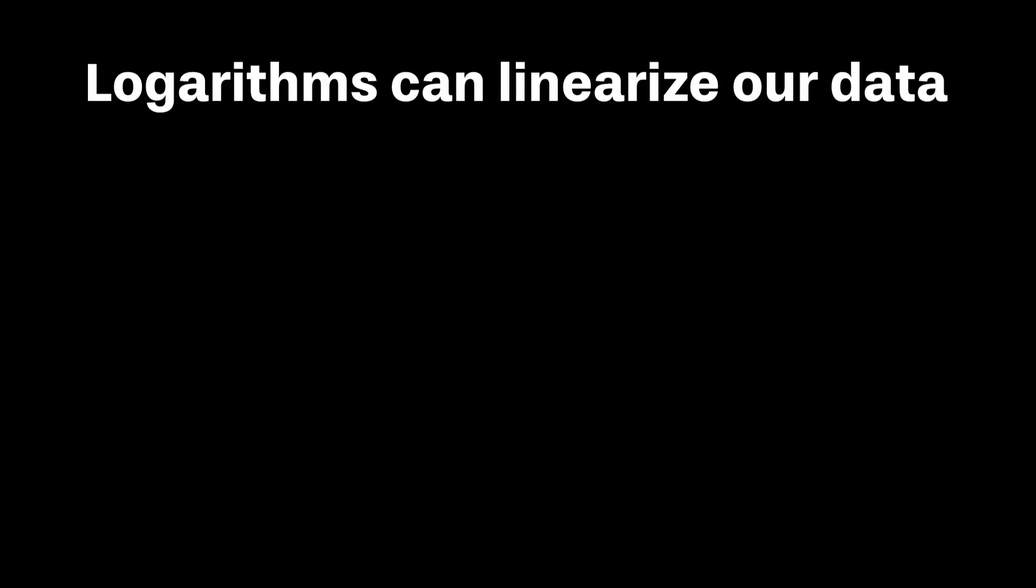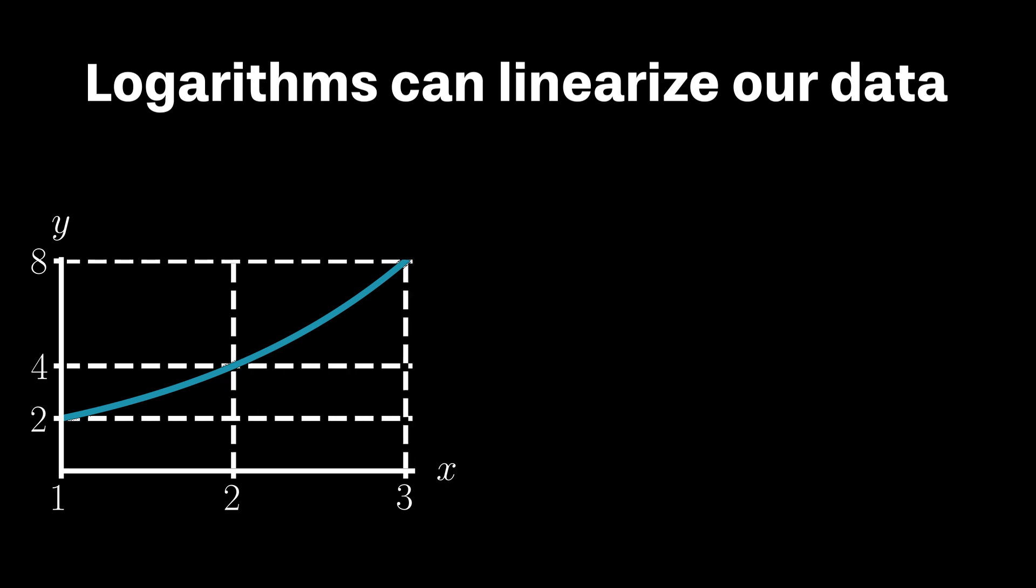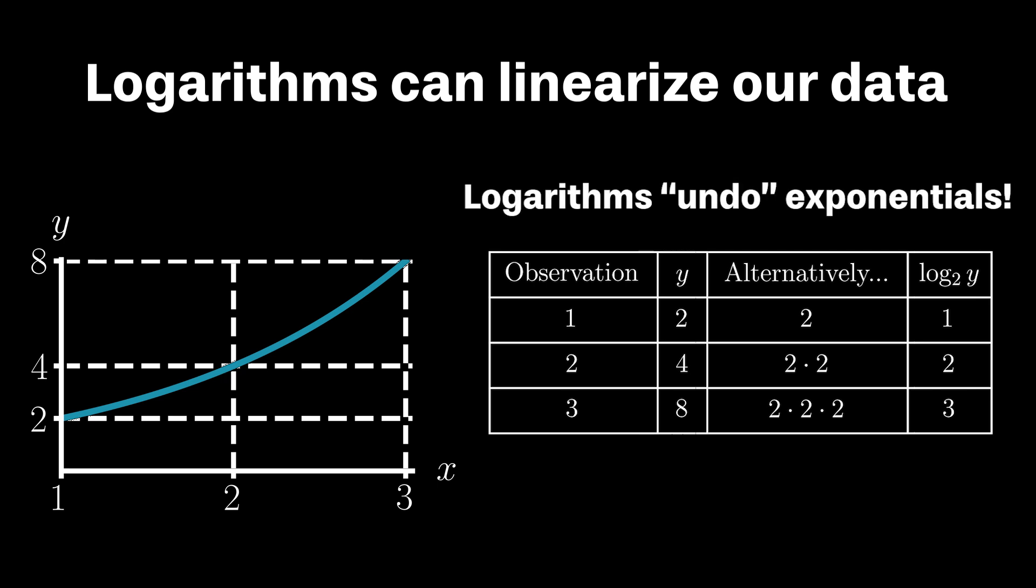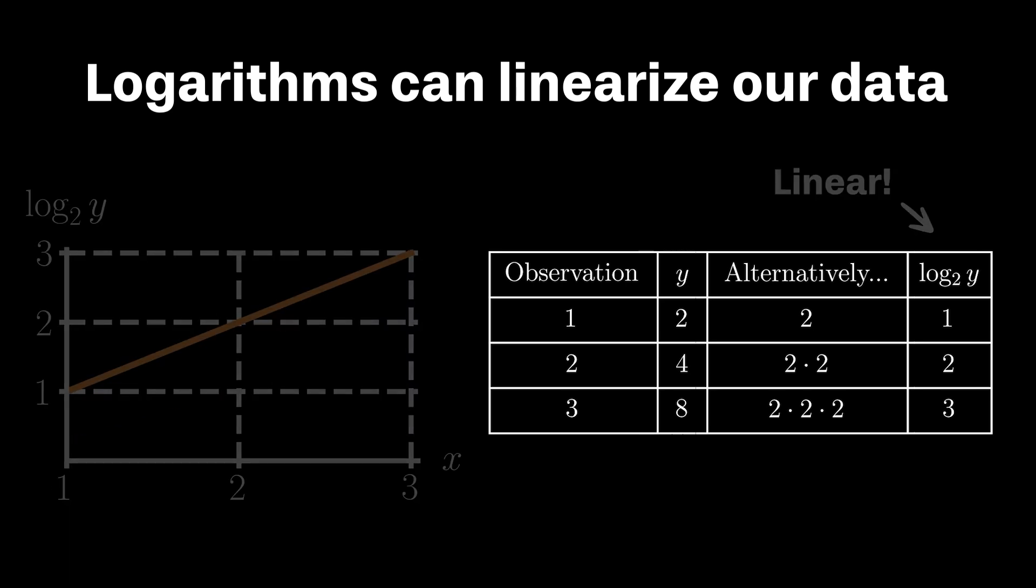So now let's discuss how logs linearize our data before discussing why we might want to do that. Let's plot some variable y that is increasing in some exponential fashion. Let's tabulate each of these observations and once we've done that let's rewrite each y in terms of the number of twos that would need to be multiplied together to yield y. This is the implicit meaning of logarithms, in this case log base 2. 2 raised to what exponent will yield y? And so in other words logarithms in a sense undo exponential functions and so something that was more or less exponential can now be linearized.